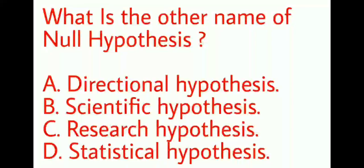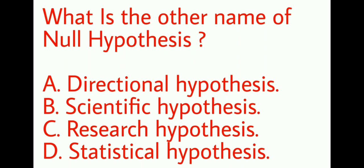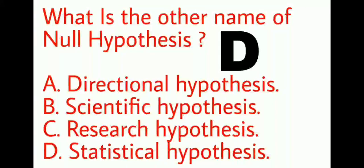Next question. What is the other name of null hypothesis? The options are: directional hypothesis, scientific hypothesis, research hypothesis, statistical hypothesis. The right answer is option D. Statistical hypothesis is another name of null hypothesis.